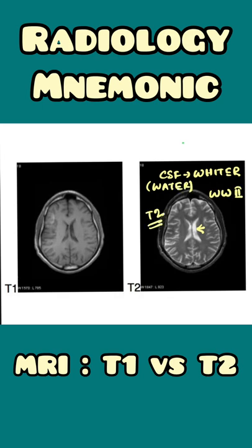And on the left hand side, if you see, the cerebrospinal fluid is darker than the surrounding tissue, and hence it is a T1 MRI.